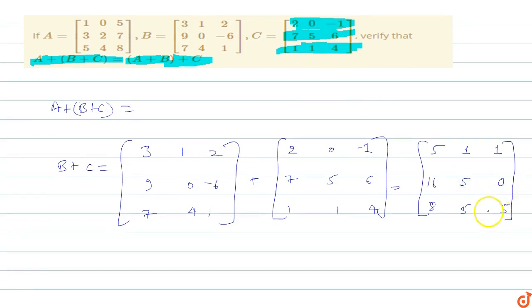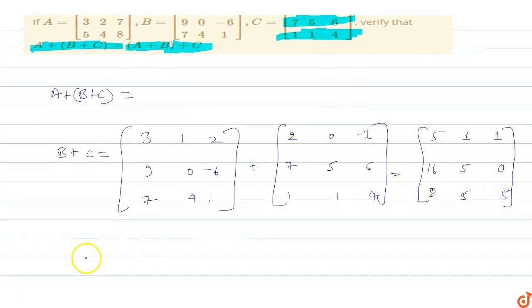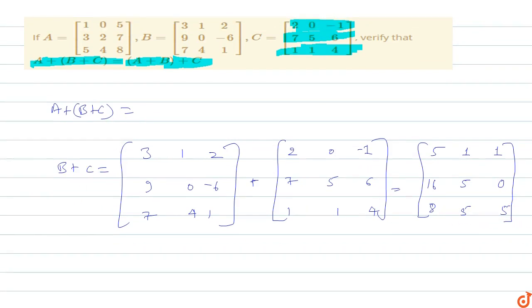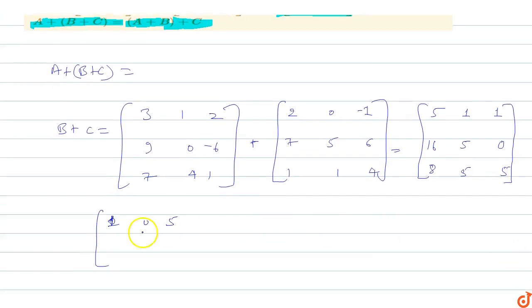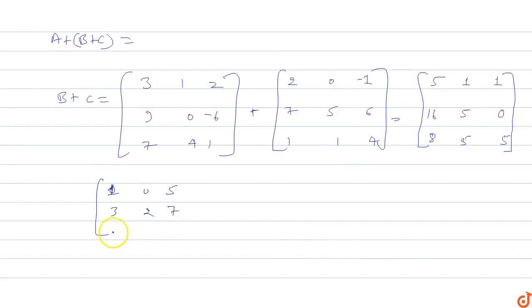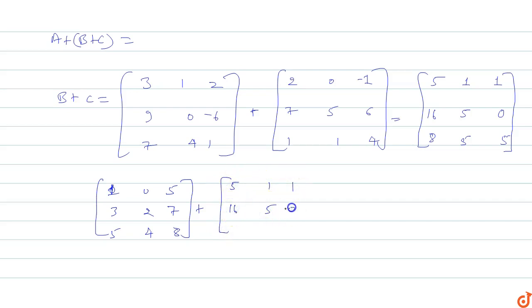Now we compute A + (B + C). Matrix A is 1 0 5 / 3 2 7 / 5 4 8, and B + C matrix is 5 1 1 / 16 5 0 / 8 5 5.